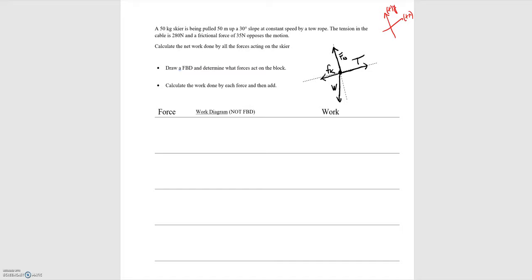The weight force is the only force not in purely the y or x direction, so let's get an angle associated with it. The incline is 30 degrees, and here is the 90 degree angle. Drawing the y and x components of weight, matching up the 90s tells us that the angle theta between the weight vector and the y-axis is equal to 30 degrees.